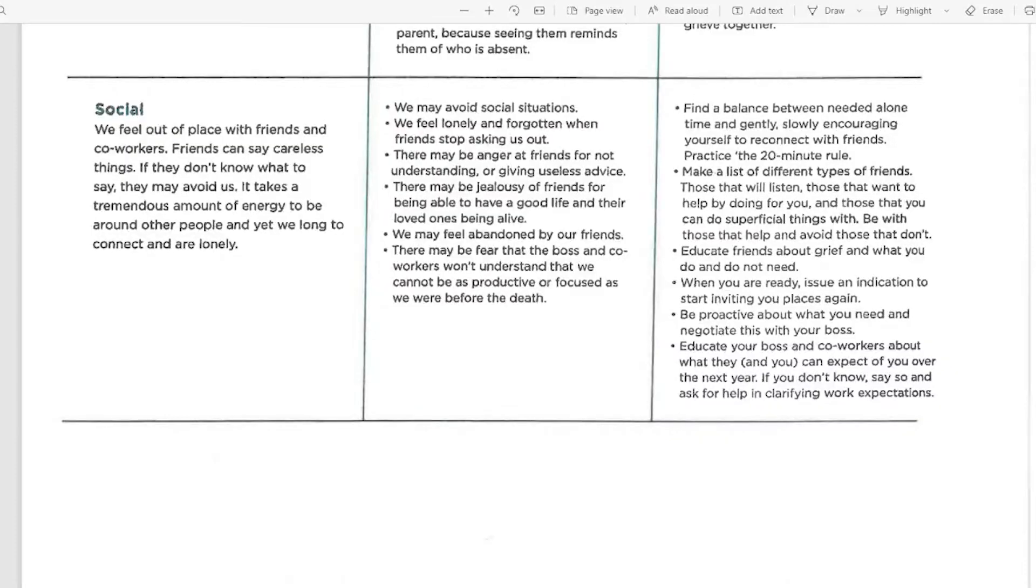We can make a list of different types of friends, those that are going to listen, and those that want to be helped to you by doing things for you, and those that you can just be there superficially with, those friends that aren't deep friends. Because with those that help and avoid, those that don't, you have to be aware of the fact that we have to start feeling, okay, who is going to help me through this, and who's not going to help me through this, who maybe isn't someone that I should spend a lot of time with as I'm grieving.